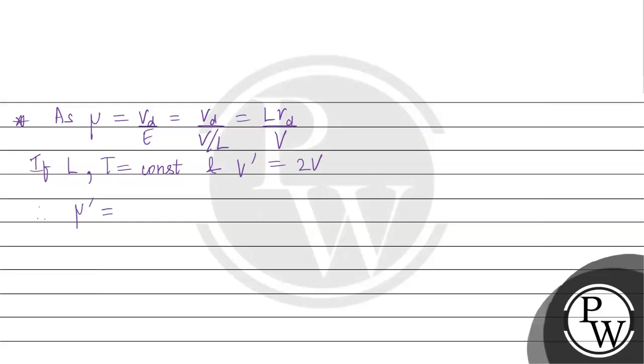Therefore, mu dash with L remaining the same, Vd remaining the same, and V becoming V dash gives Vd L by 2V. Since Vd L by V equals mu, this gives mu by 2.